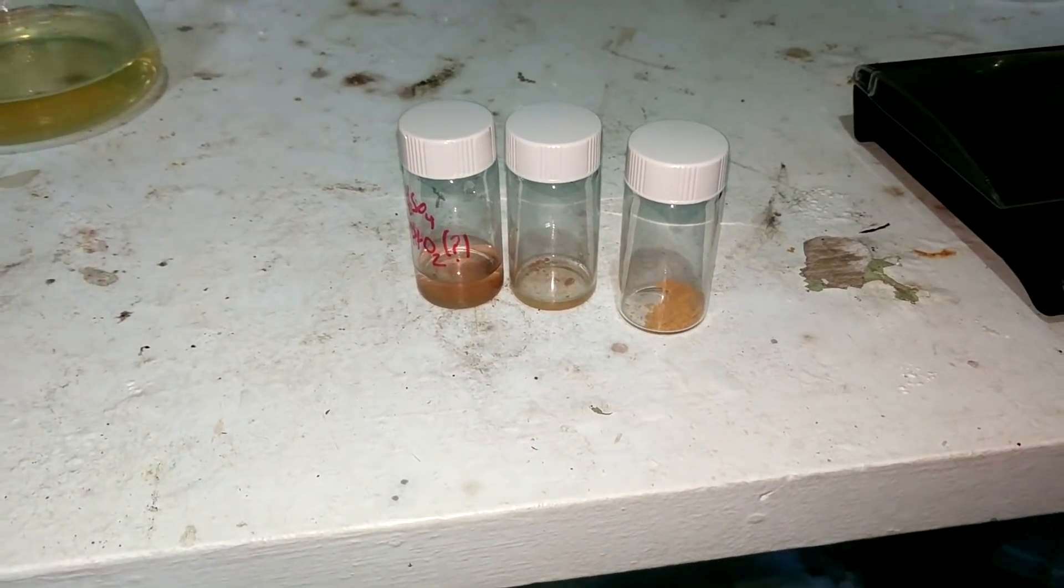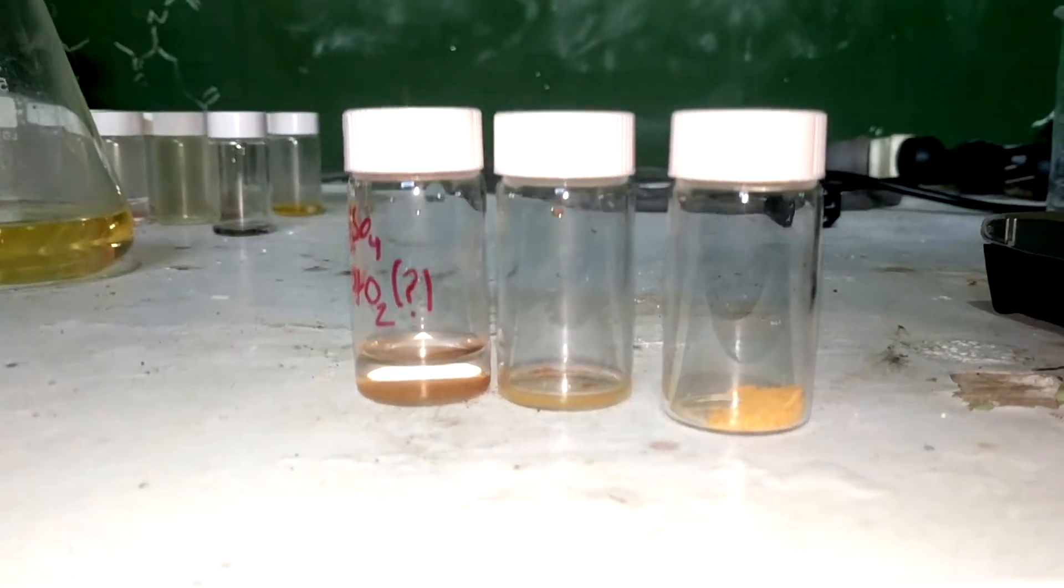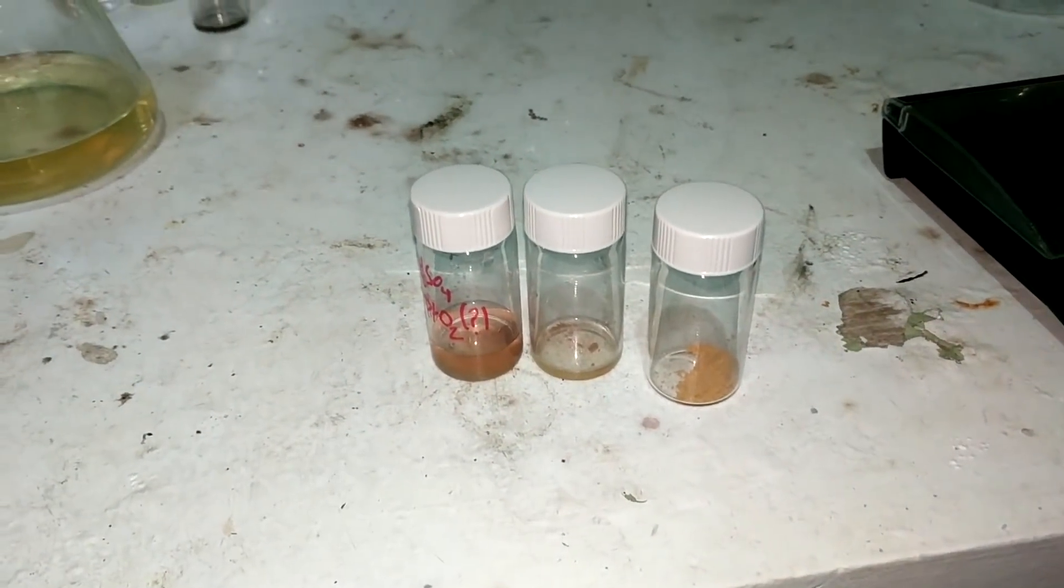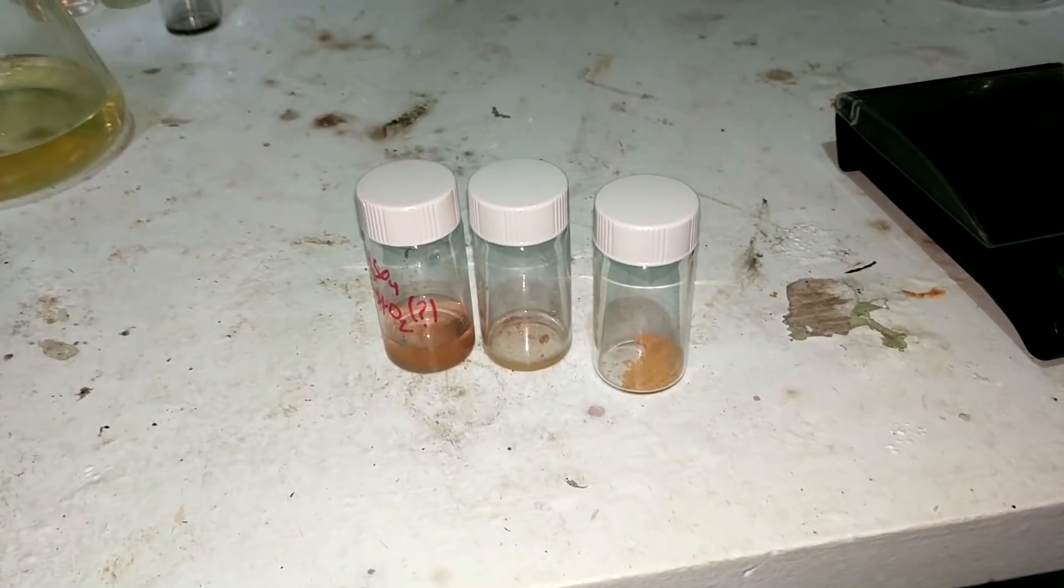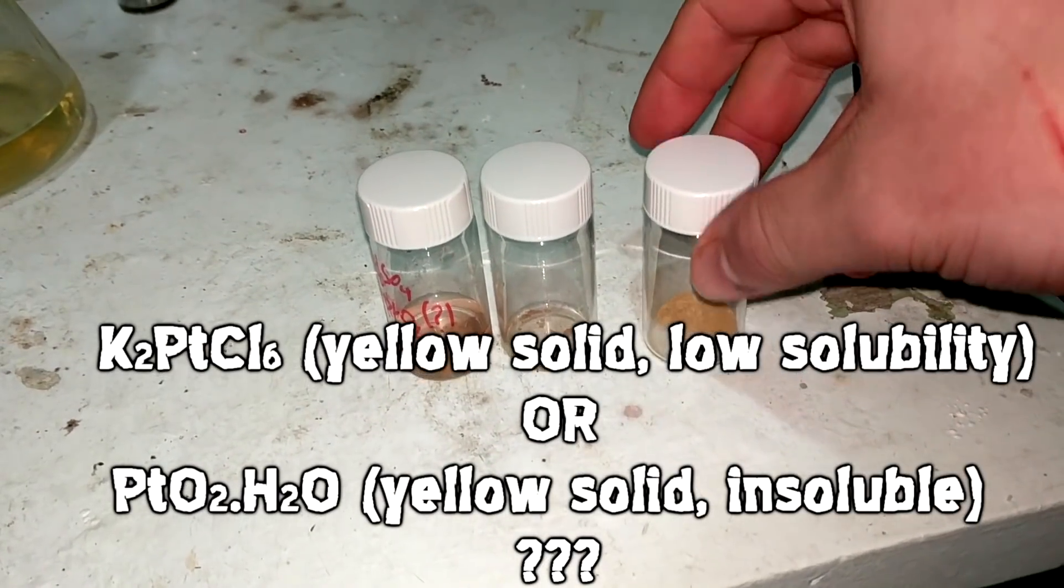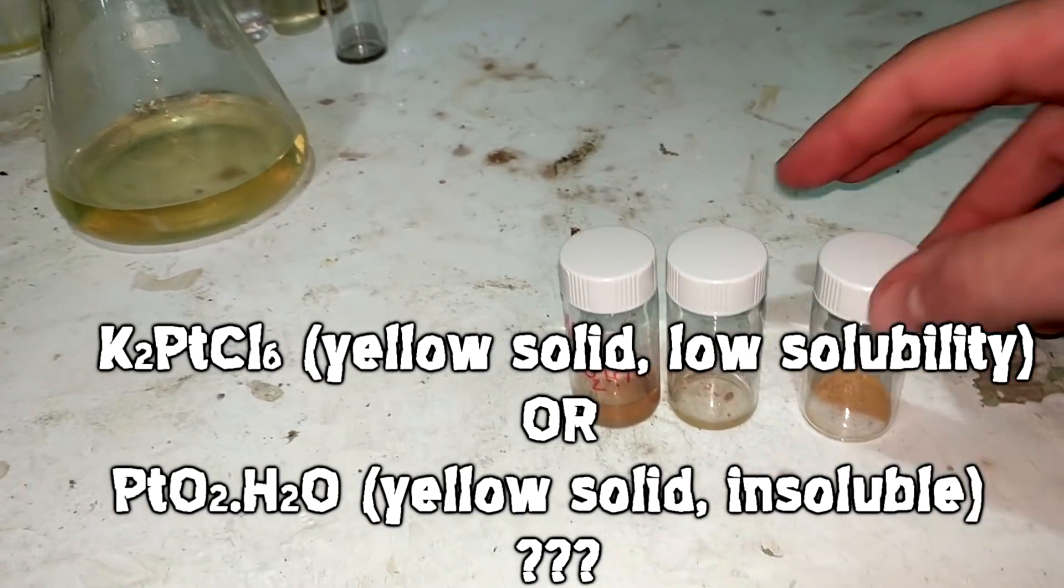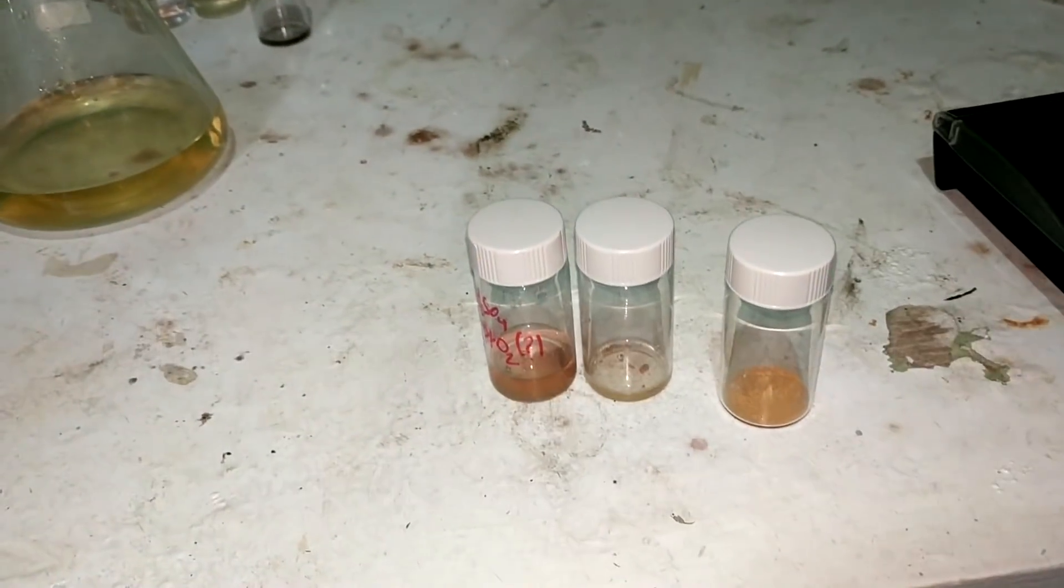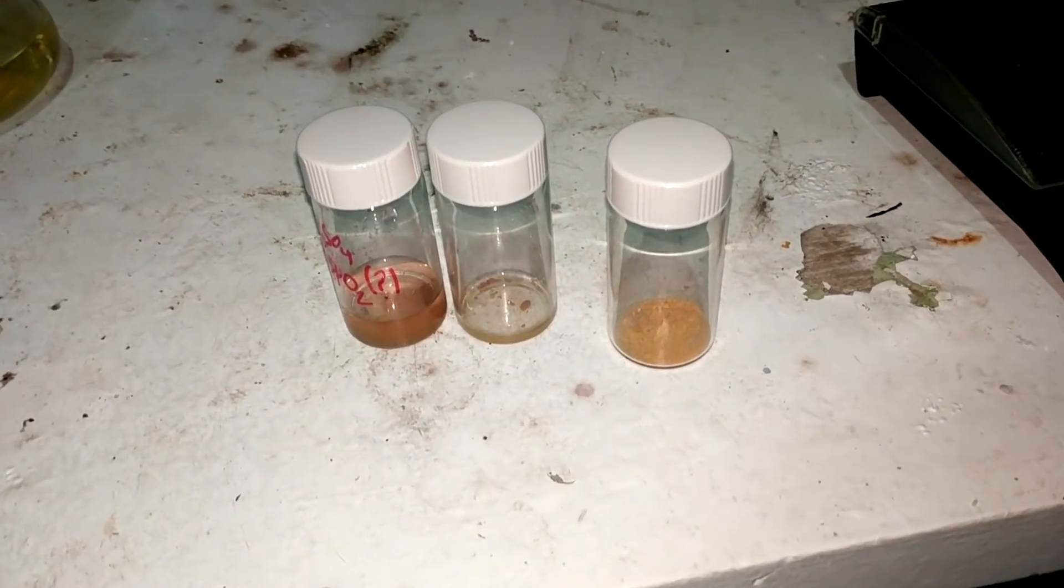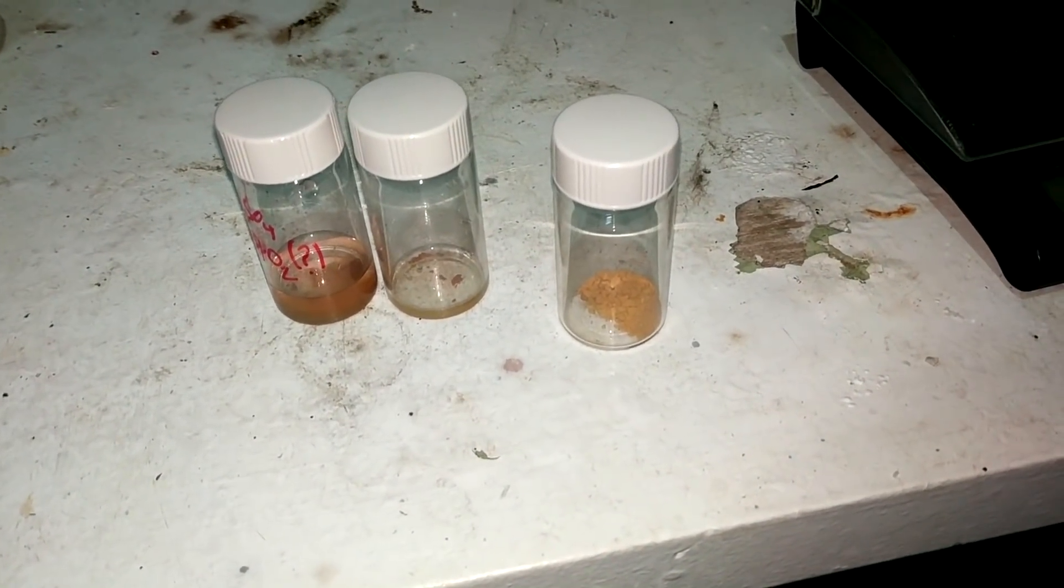All right that was meant to be the final shot of the video. It was going to dissolve in the acid everything was going to be good but it didn't dissolve in the acids at all. It just formed a suspension in both sulfuric and nitric acid which leads me to believe it's not platinum oxide at all. It's potassium hexachloroplatinic acid which is quite insoluble in water. So what we have isn't actually platinum oxide, it's just the potassium salt of the chloroplatinic acid which is very annoying. But what we can do is take this and heat it with some more potassium nitrate. I'm fucking fed up with this.